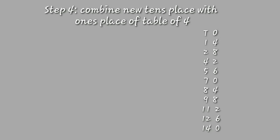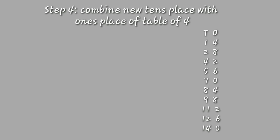Yes, this is the table of 14: 14, 28, 42, 56, 70, 84, 98, 112, 126, and 140. This is the complete table of 14 — 14 ones are 14, 14 twos are 28, 14 threes are 42, 14 fours are 56, 14 fives are 70, 14 sixes are 84, 14 sevens are 98, 14 eights are 112, 14 nines are 126, and 14 tens are 140. Those are the steps for writing the table of 14.